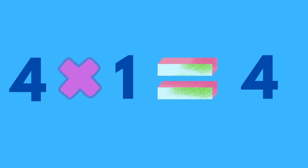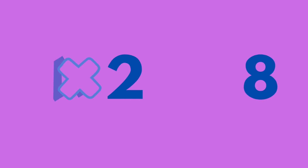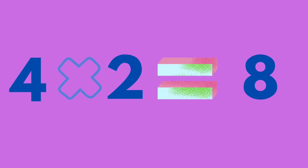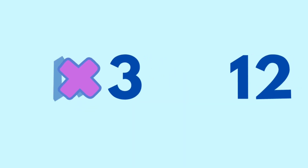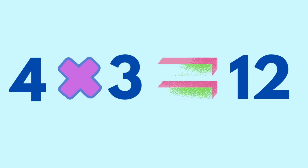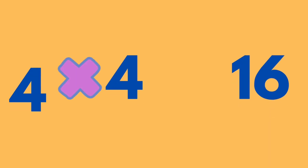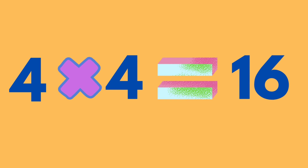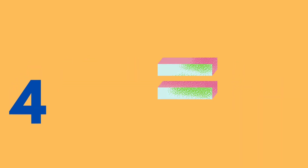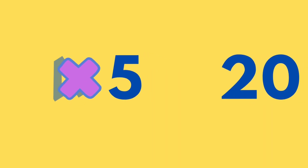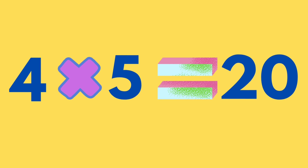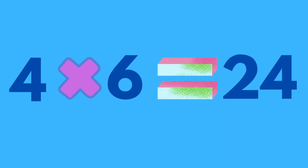4 times 1 is equal to 4. 4 times 2 is equal to 8. 4 times 3 is equal to 12. 4 times 4 is equal to 16. 4 times 5 is equal to 20. 4 times 6 is equal to 24.